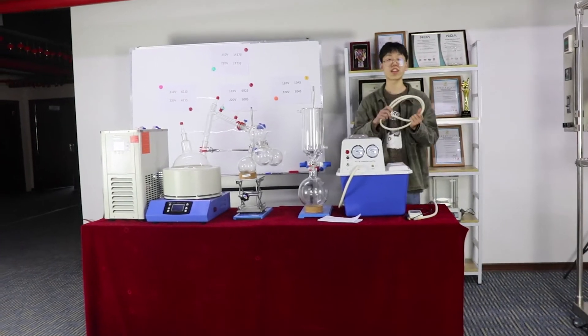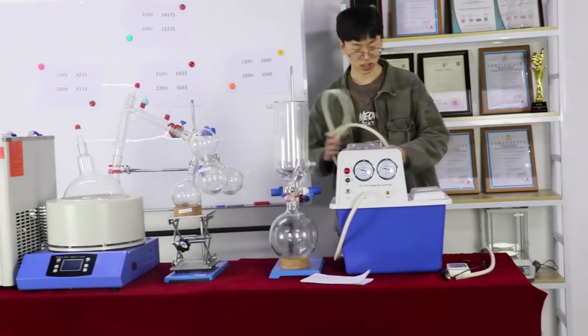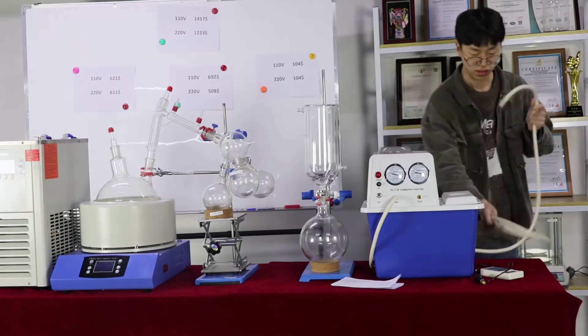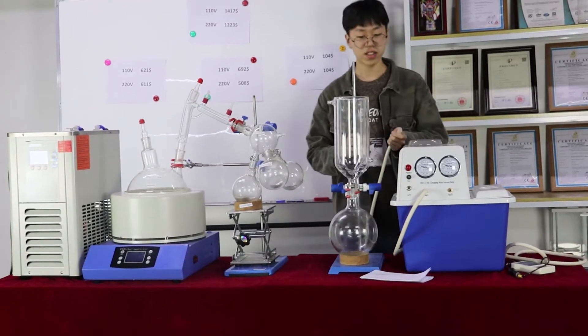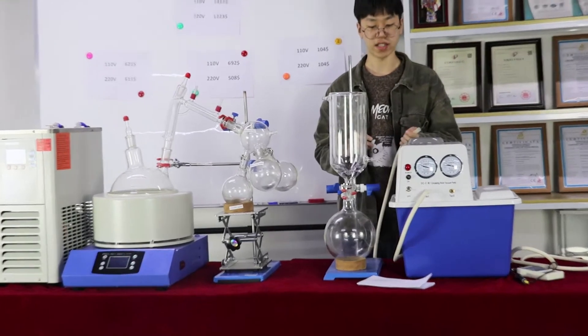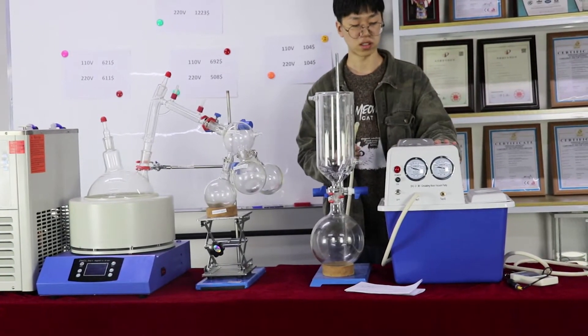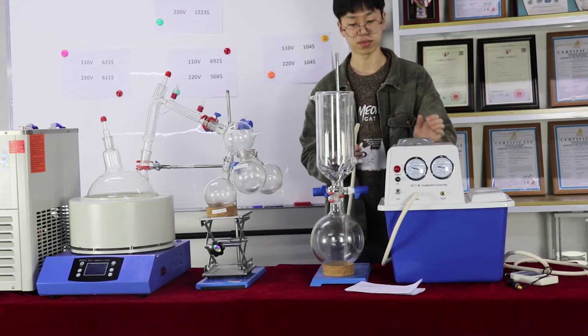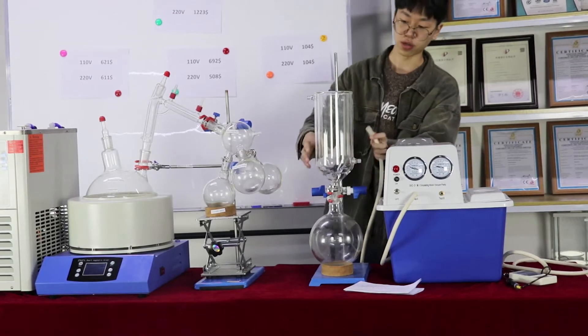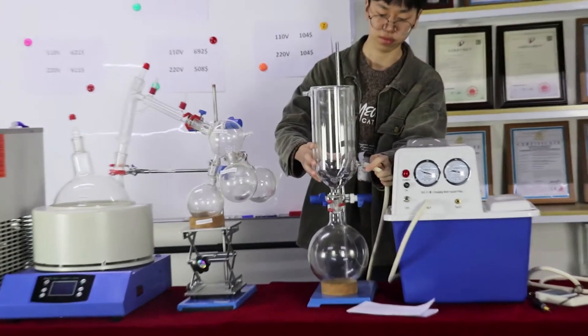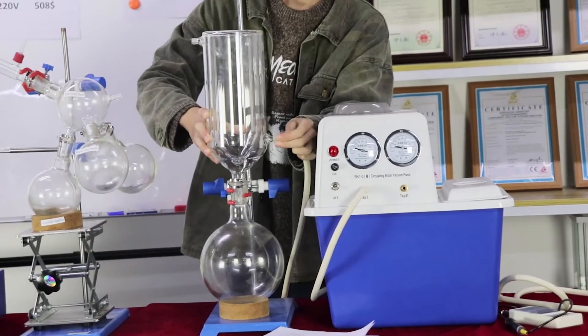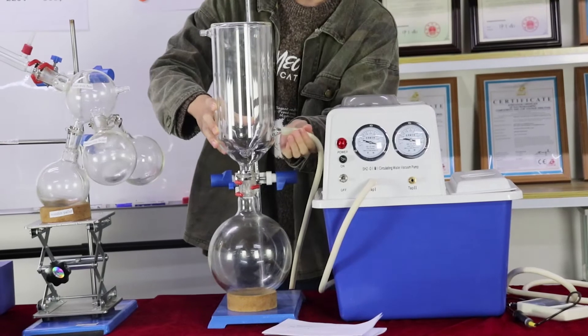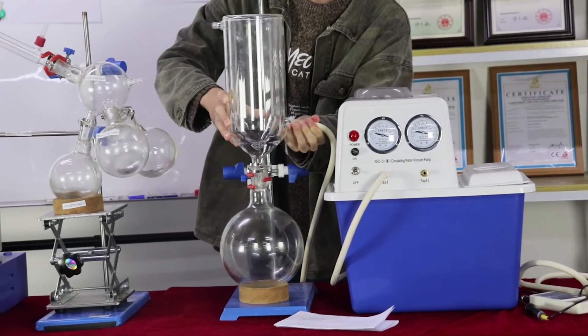This is the vacuum tube. First, I need to connect the circulating water vacuum pump to the cold trap. It needs to lock out.